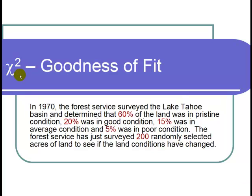This is a video on chi-squared goodness of fit. The question states: In 1970, the Forest Service surveyed the Lake Tahoe Basin and determined that 60% of the land was in pristine condition, 20% was in good condition, 15% was in average condition, and 5% was in poor condition. The Forest Service has just surveyed 200 randomly selected acres of land to see if the land conditions have changed.